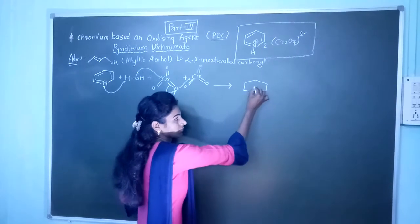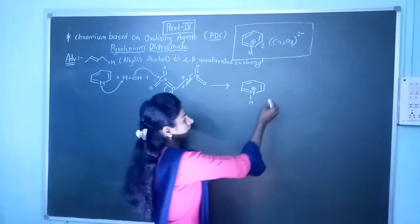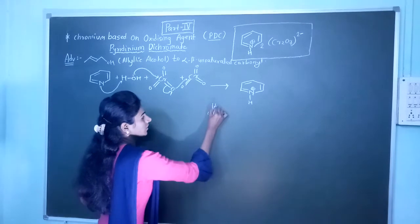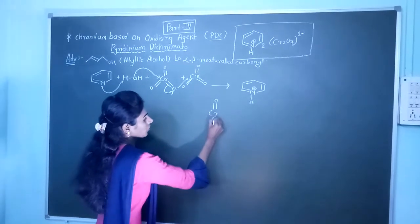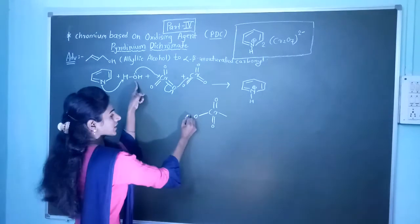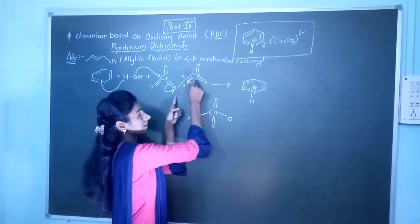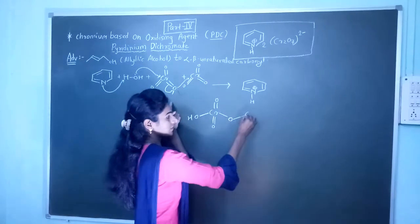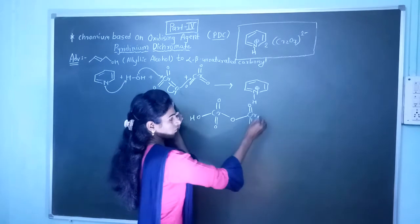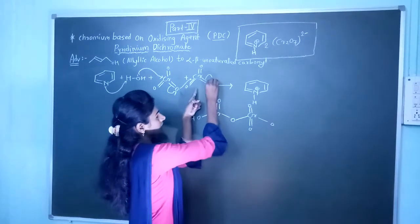The nitrogen becomes NH⁺ — its valency is increased, that is why there is a positive charge. The reagent has Cr with double bond O groups. This O⁻ will attack over the chromium, and it becomes Cr-O, and this will become O⁻.